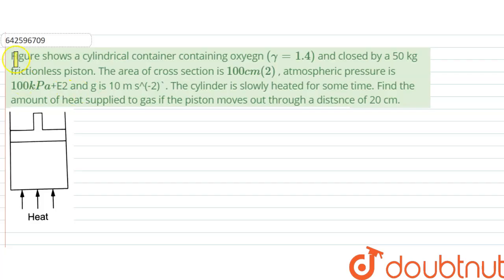Hello, we are given with a question and the question says: Figure shows a cylindrical container containing oxygen, gamma equals 1.4, and closed by 50 kilogram frictionless piston. Here this is the piston.